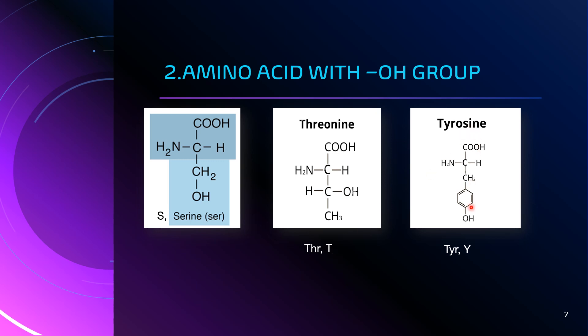Next is tyrosine. Tyrosine is also an aromatic amino acid because it possesses a benzene ring. The R group is the portion beyond the basic structure. TYR is the three-letter code, and capital letter Y represents tyrosine — since threonine is already represented by capital T, the single-letter code for tyrosine is capital letter Y.